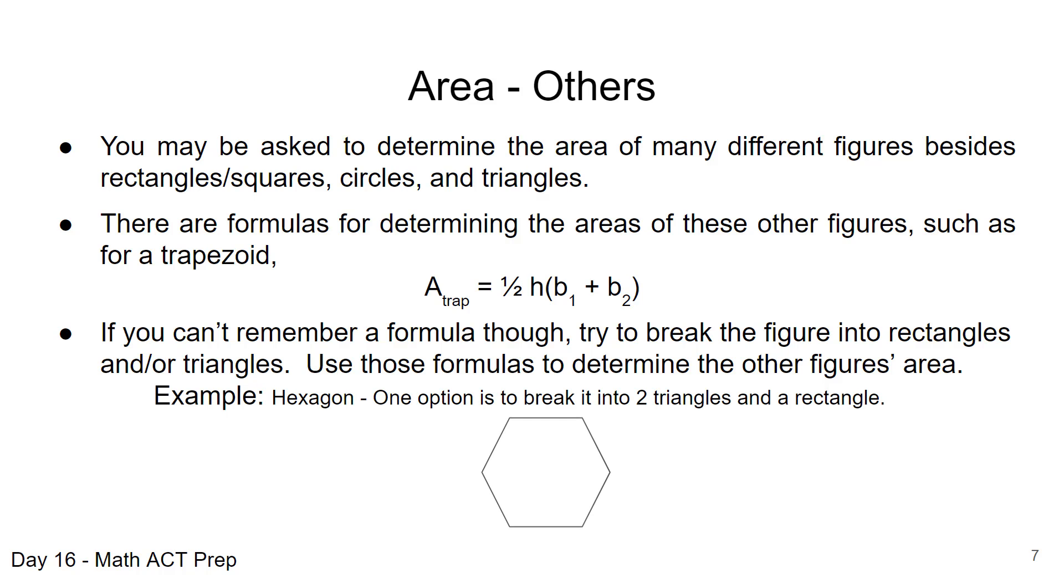So let's take, for example, this hexagon, and there's many different ways you can do this, but one option would be maybe to break it down into two triangles and a rectangle. You could break it down into two trapezoids, if you remember that, and so what we can do is if we have some other dimensions that we're given, we can use those and then have the area of the total figure to be two triangles and one rectangle.